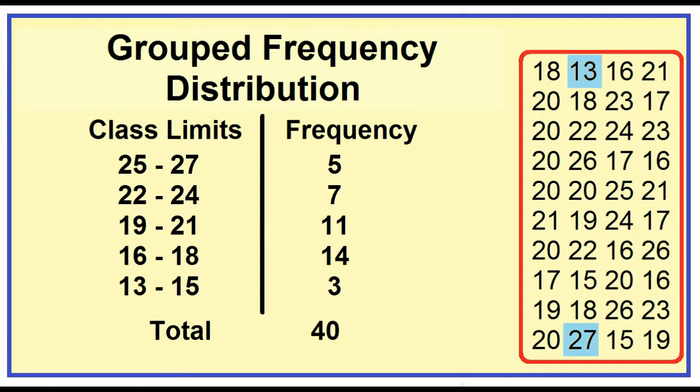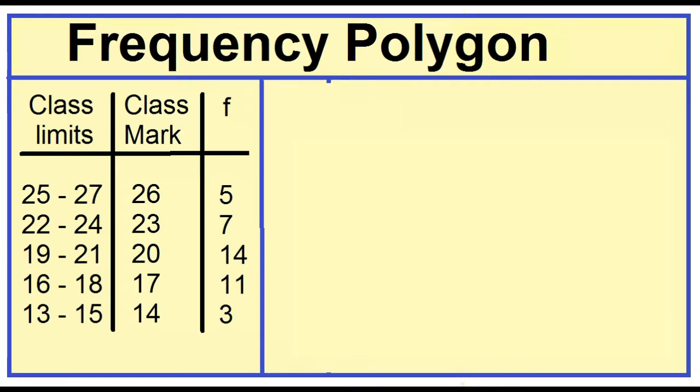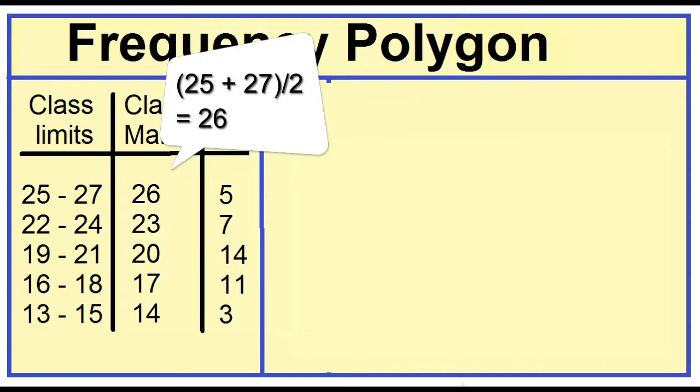Another way of presenting data is by making a frequency polygon. Using the same group frequency distribution, construct a frequency polygon. To make a frequency polygon, we need the class mark of each class and its corresponding frequency. The class mark is just the midpoint of each class. Just add the lower limit and the upper limit, then divide it by 2. For example, 25 plus 27 is 52 divided by 2 is 26.